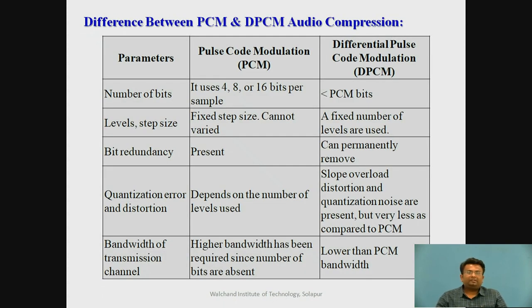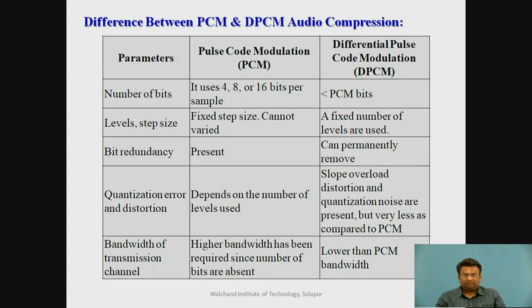The differences between PCM and DPCM audio compression: PCM uses 4, 8, or 16 bits per sample, while DPCM requires fewer bits than PCM. PCM uses a fixed step size with a fixed number of levels. Redundant bits present in PCM can be permanently removed in DPCM. Quantization error and distortion depend on the number of levels used; in DPCM, slope overload distortion and quantization noise are present but much less than in PCM.